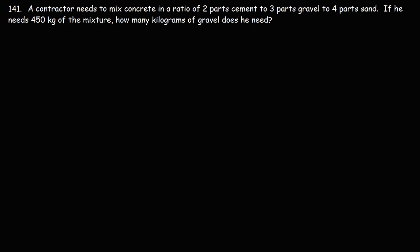Number 141, a contractor needs to mix concrete in a ratio of two parts cement to three parts gravel to four parts sand. If he needs 450 kilograms of the mixture, how many kilograms of gravel does he need?